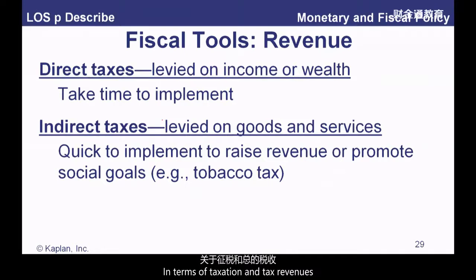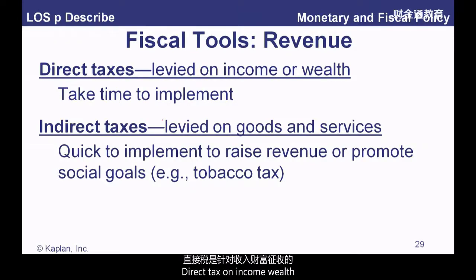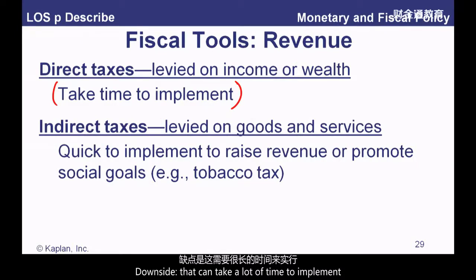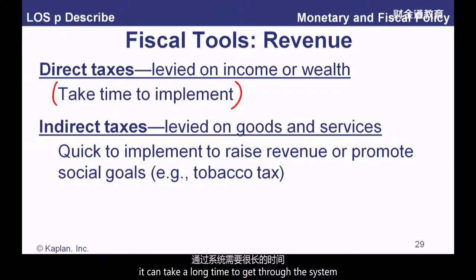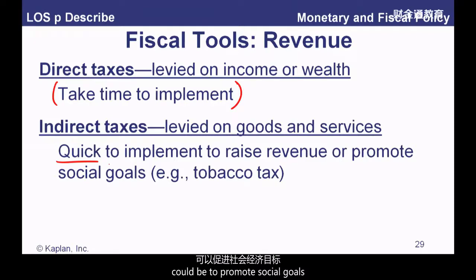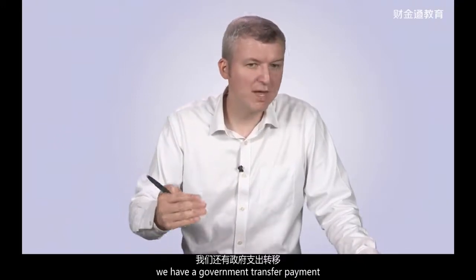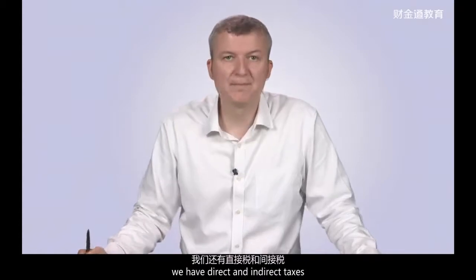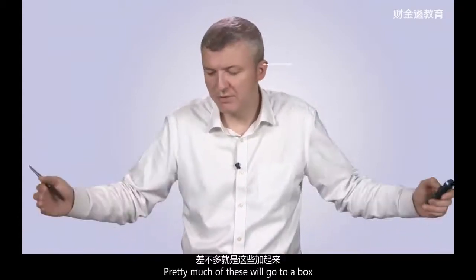In terms of taxation, we have direct and indirect taxes. Direct taxes are on income or wealth — we all suffer them. The downside is they can take a long time to implement; changing your taxation system can take a long time to get through the political process. Indirect taxes are on goods and services — much quicker, you can just apply a sales tax straight away. They can generate revenue or promote social goals, with tobacco tax being the classic example. So: current and capital government spending, transfer payments, and direct and indirect taxes — that's your fiscal toolbox.